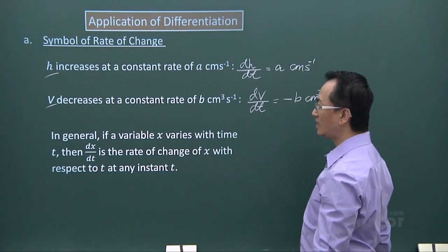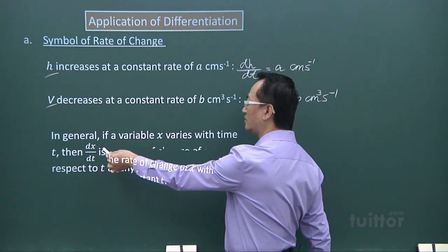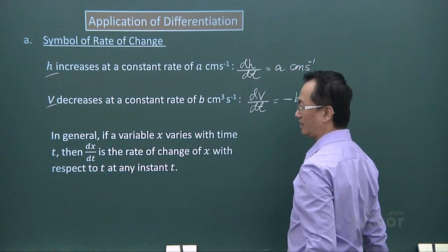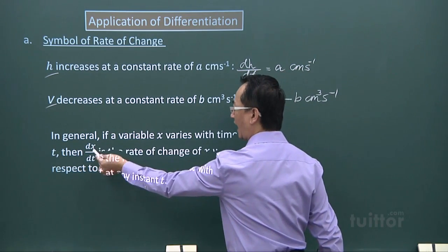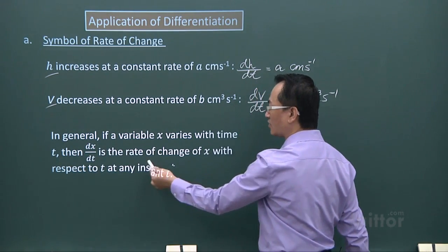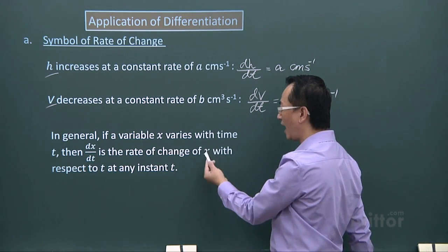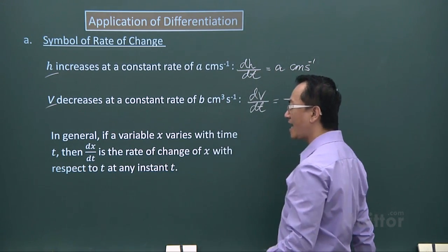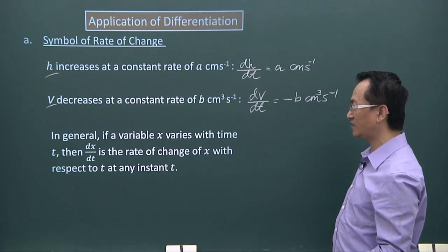Let's look at this in general. If a variable x varies with time t, then dx/dt is the rate of change of x with respect to t at any instant of t.